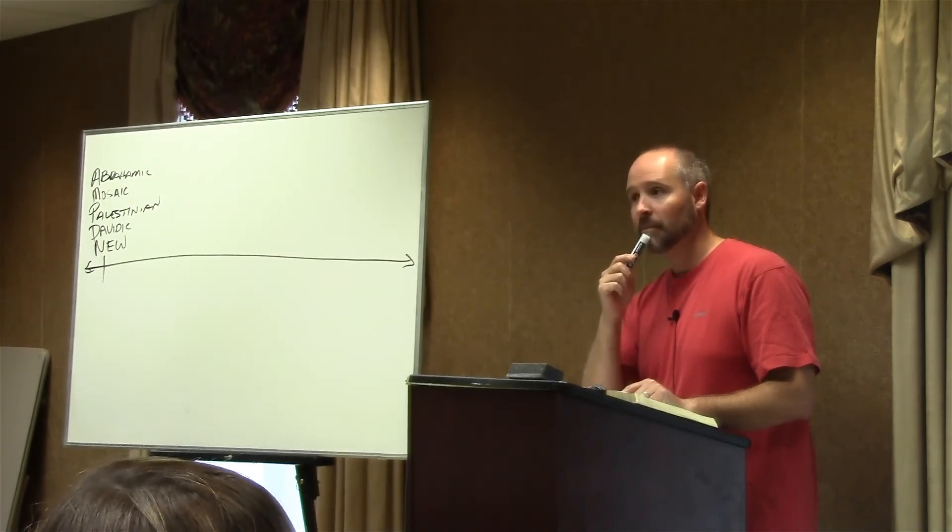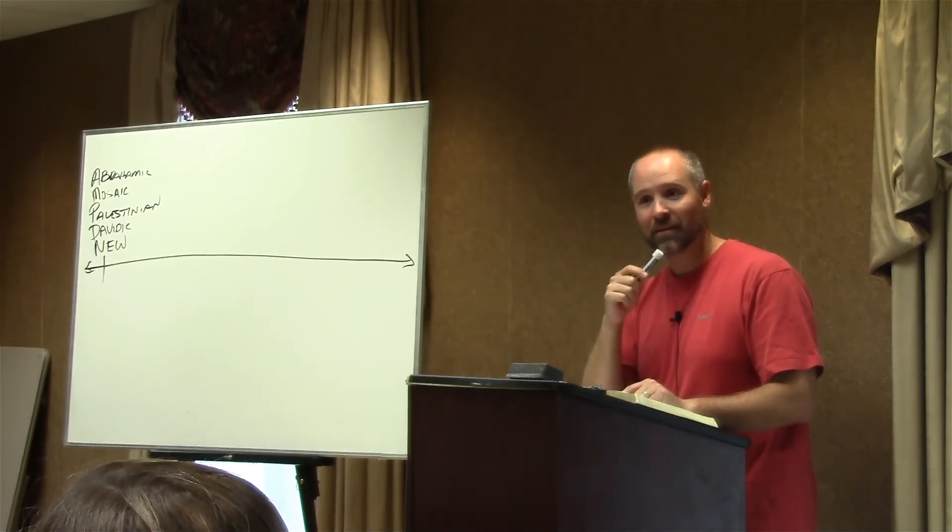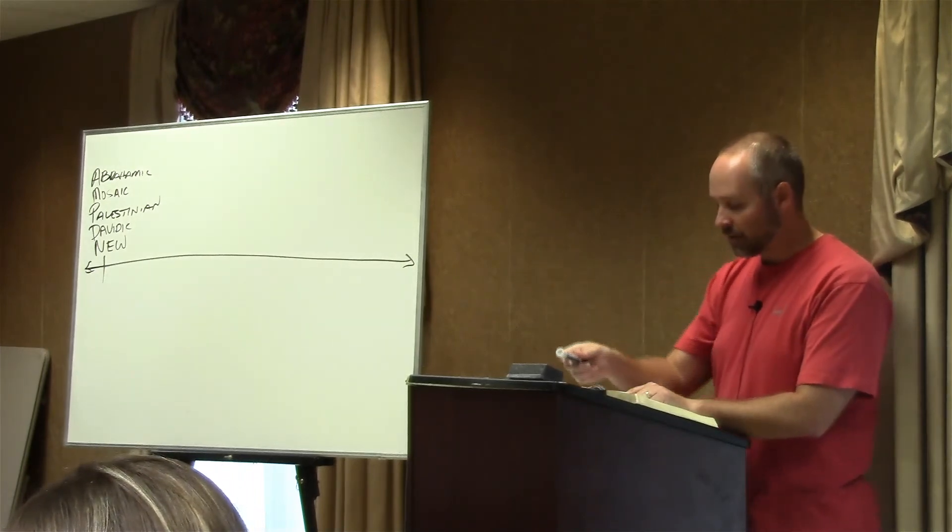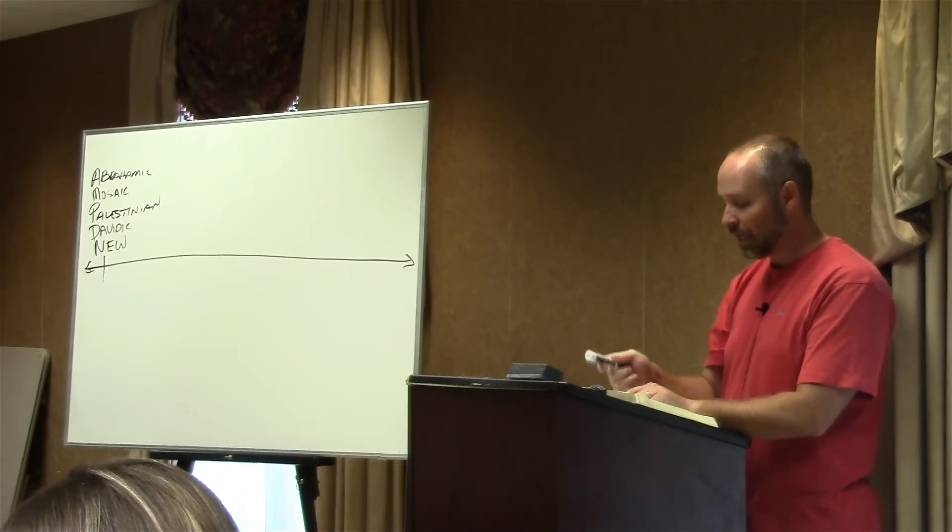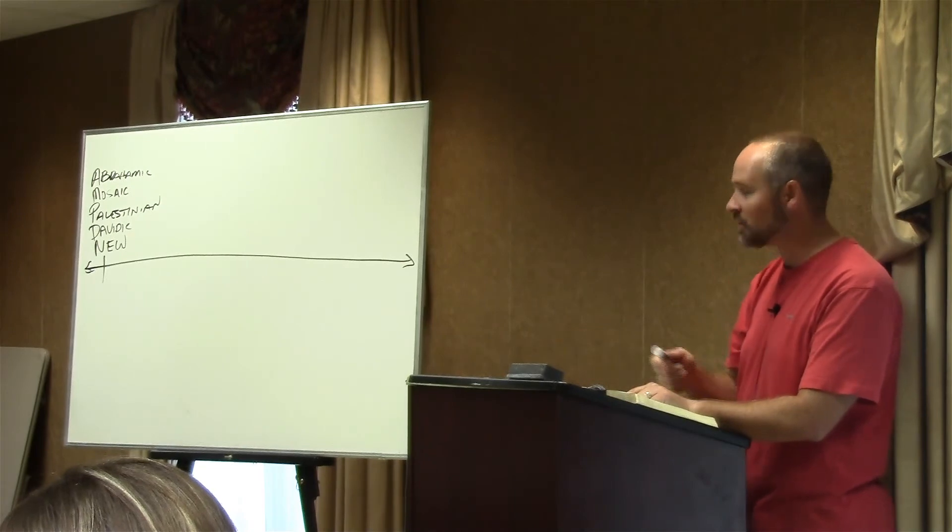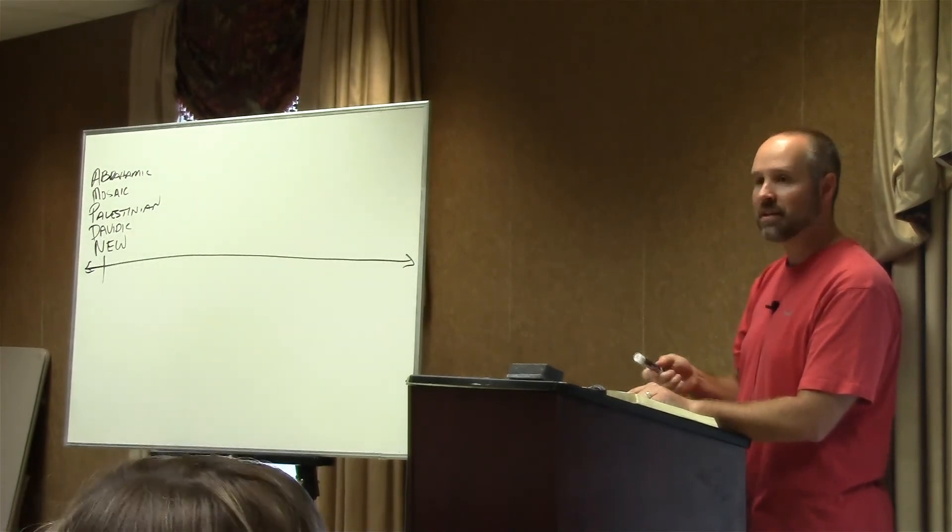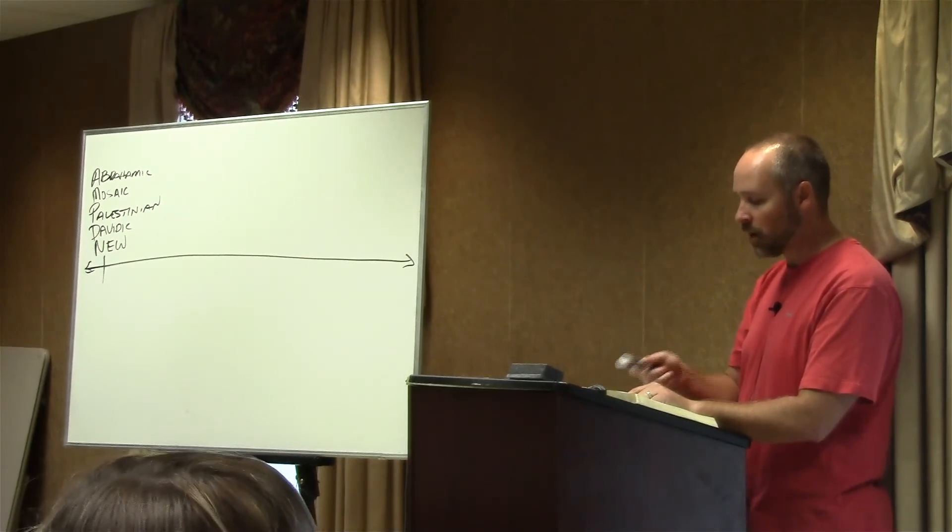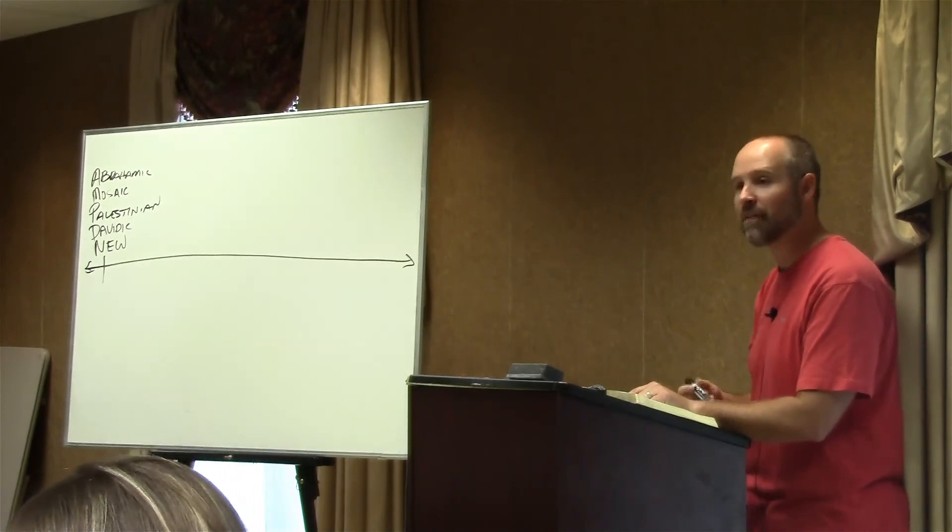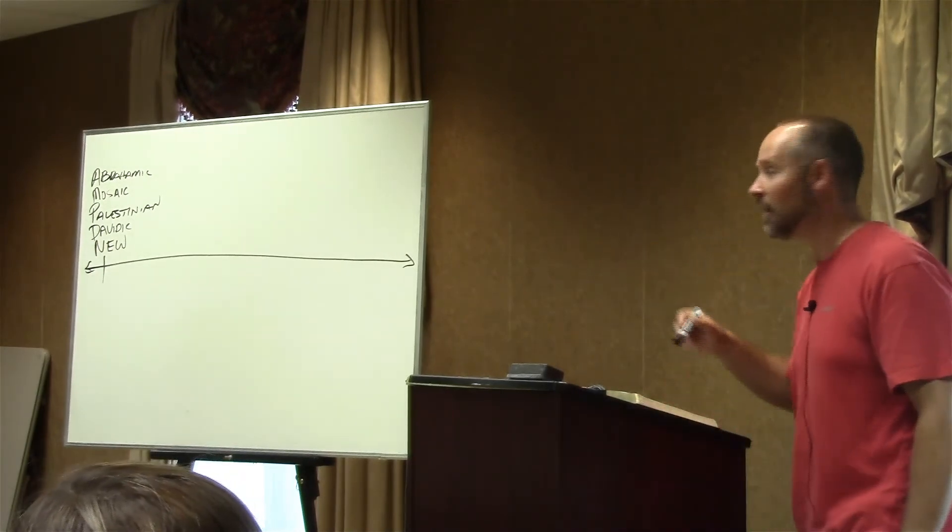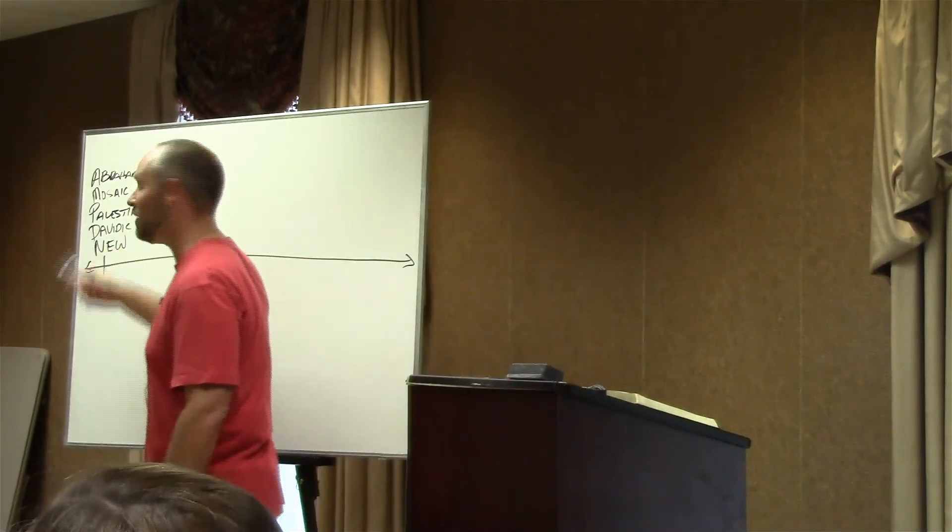Verse 28. And ye shall dwell in the land that I gave to your fathers. And ye shall be my people and I'll be your God. Pause right here. Who here is Israel? None of you. We're not Israel, are we? He says, and ye shall dwell in the land that I gave to your fathers and ye shall be my people and I'll be your God. I will also save you from all your uncleanness. We'll see that crop up again over in Romans chapter 11, verse 26, 27. I will also save you from all your uncleanness and I will call for the corn and will increase it and lay no famine upon you. There's a prophecy concerning the future kingdom we're going to talk about here in just a second. But here God makes a covenant, a new covenant.